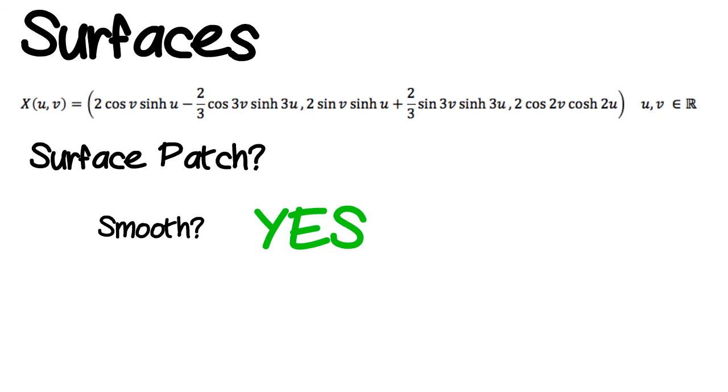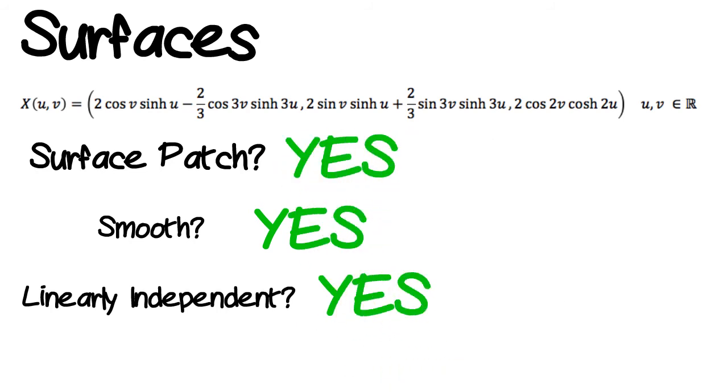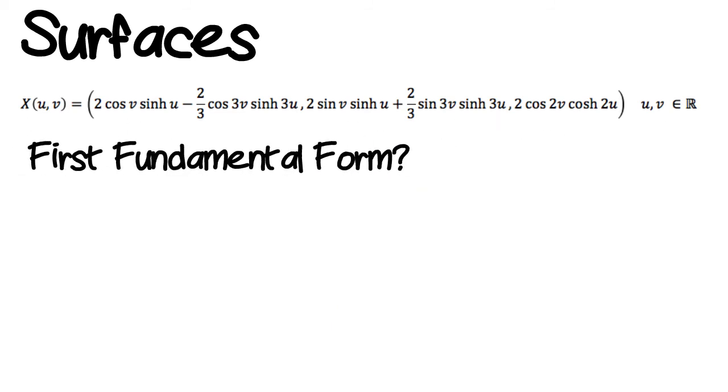Our function X is smooth since it's differentiable at all UV elements of the real numbers. To check the partial derivatives are linearly independent, we need to show that the norm of the cross product of the two partial derivatives is zero. Since our surface is a surface patch, we can find the first and second fundamental forms. The first fundamental form is the inner product of the tangent vector. Its coefficients can be used to calculate the arc length of the curve on the surface. The coefficients of the first fundamental form are...